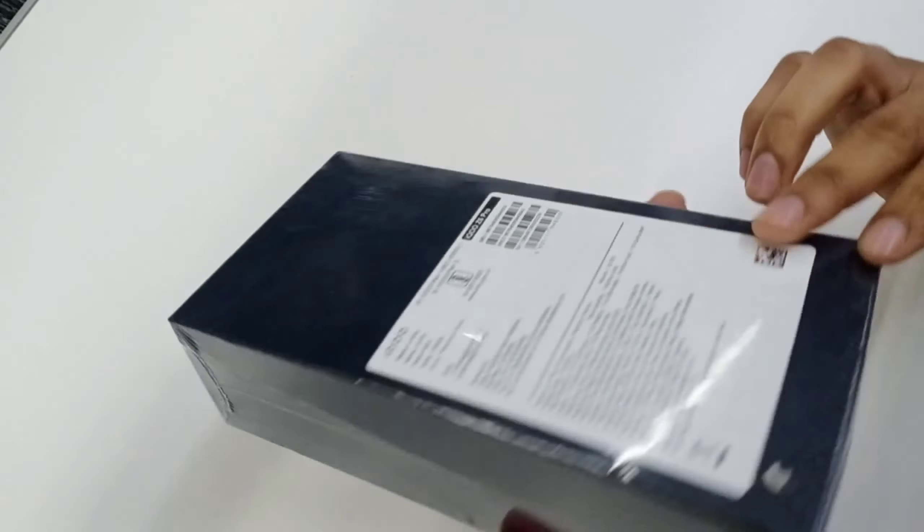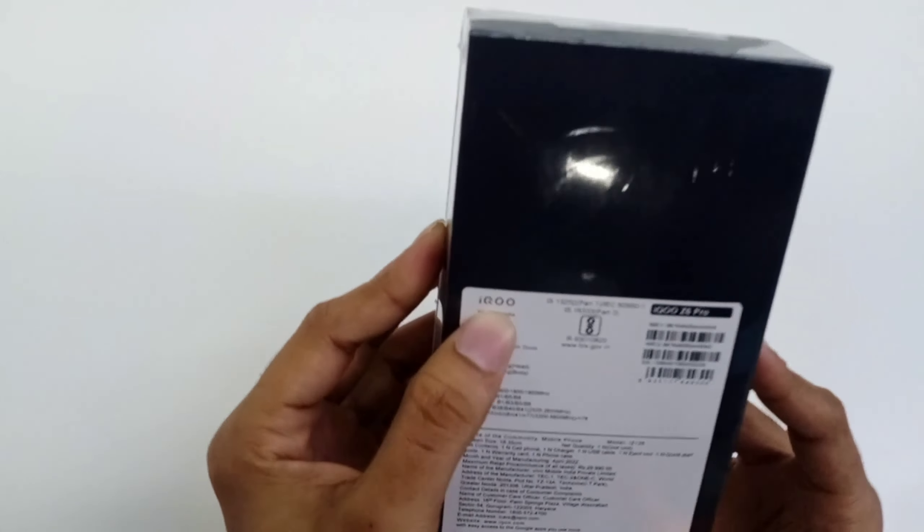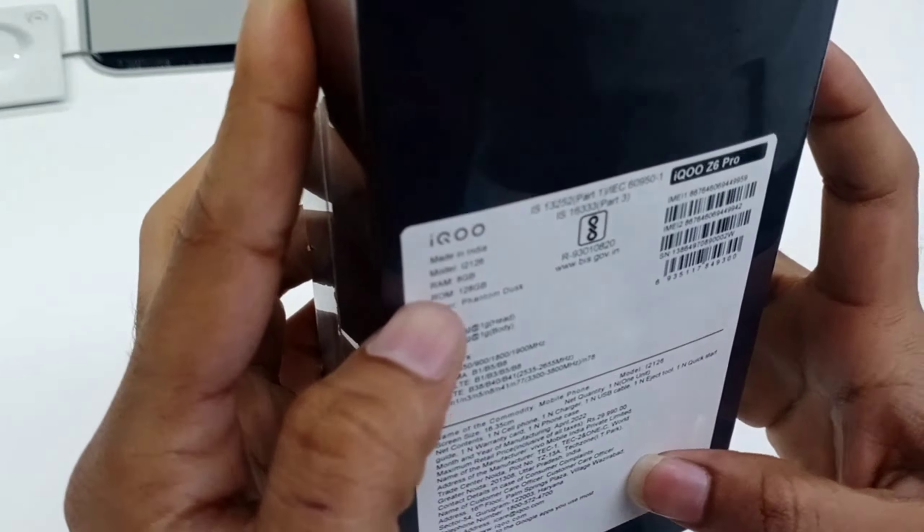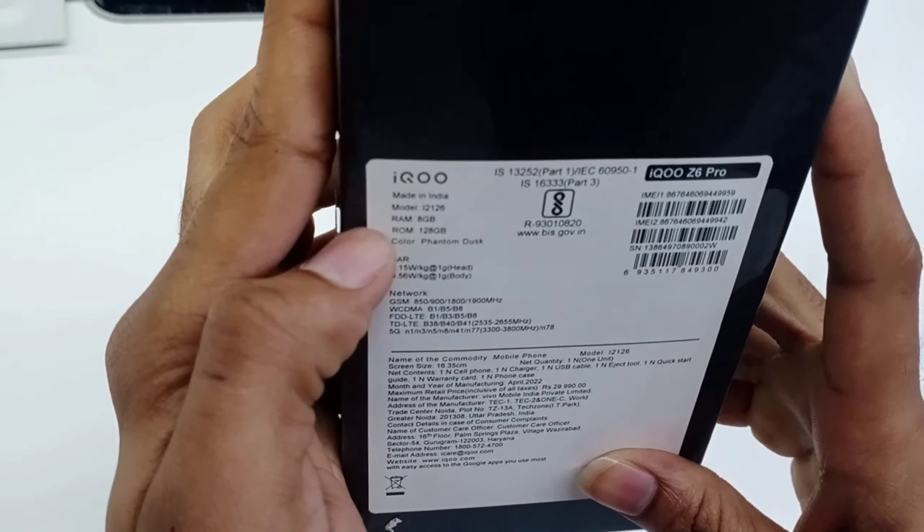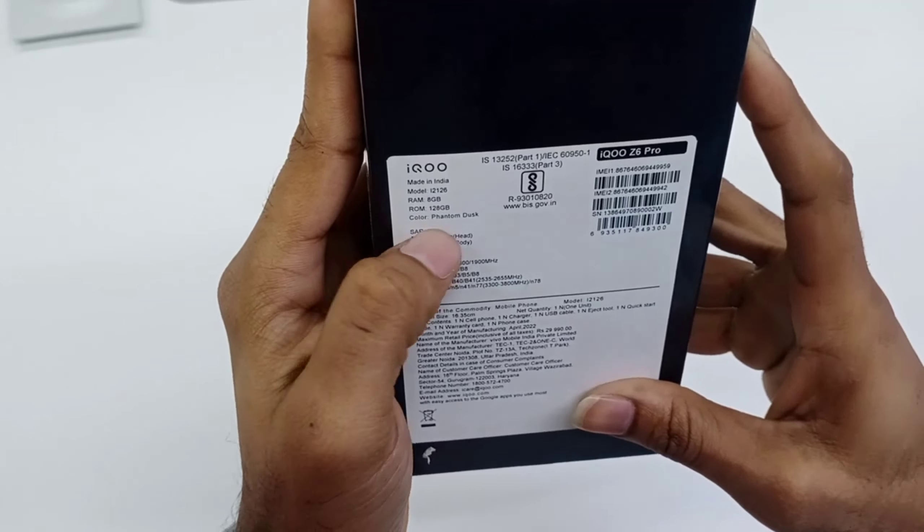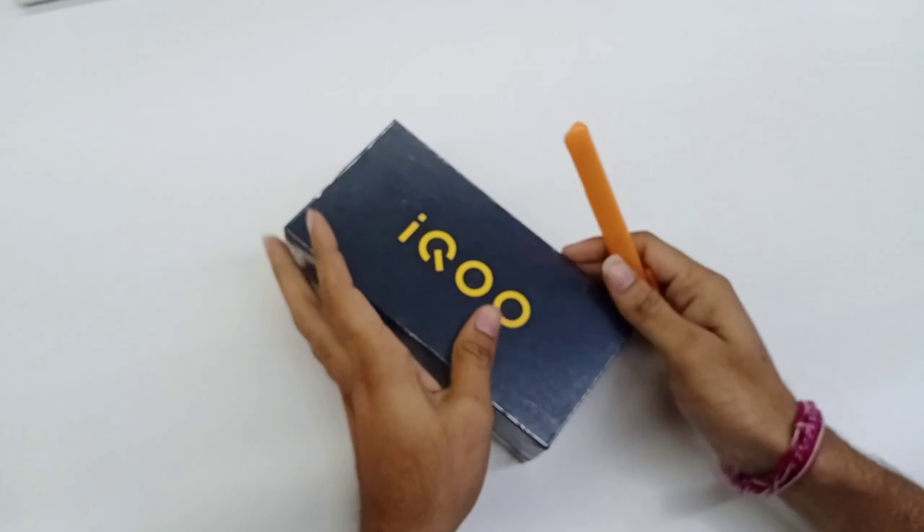So we are going to have a brand new iQOO Z6 Pro. This is made in India. This is 8GB RAM variant, and internal we have 128GB. Okay, let's open the box.